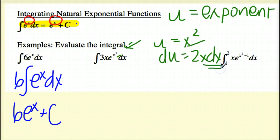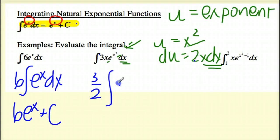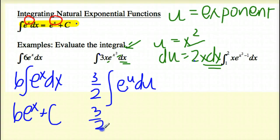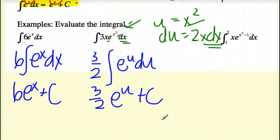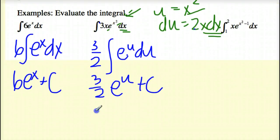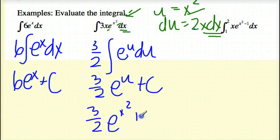I have the x dx right here, so that means I need to pull out this constant multiple of 3. I need to pull out this 2 as a reciprocal. Then I can integrate e to the u du. Since we know that the integral of e to the u du is e to the u, I end up getting 3 halves e to the u plus c. And then our last step is to plug back in u, so we get 3 halves e to the x squared plus c.